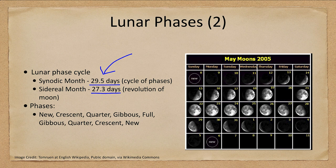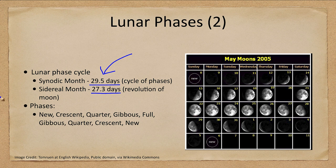The sidereal month, relative to the stars, is 27.3 days. Why is there a difference? The moon is moving around Earth, and Earth and moon are moving around the sun over the course of that month. Over one month, the Earth-moon system moves about one twelfth of the way around the sun, so it takes a couple extra days for everything to line up again relative to the sun — similar to how the solar day is four minutes longer than the sidereal day.